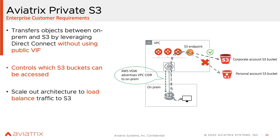This is where we solve this problem for the customer. You don't have to use the public VIF to connect to your S3 buckets over Direct Connect. The solution we provide allows you to have a private VIF. What you do on-prem is point the corporate S3 bucket FQDN to the private IP address of our gateway. The traffic is then redirected to the gateway, where we create a policy to allow the traffic to go out towards the S3 bucket.